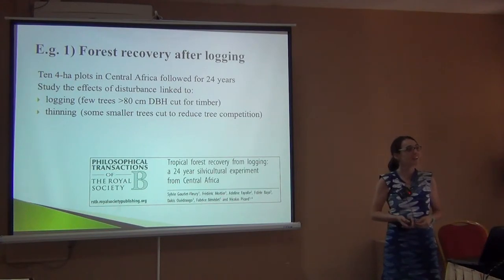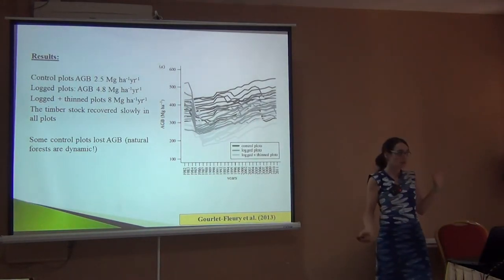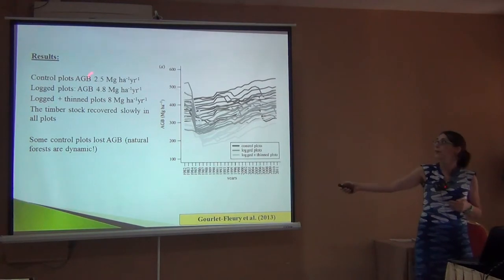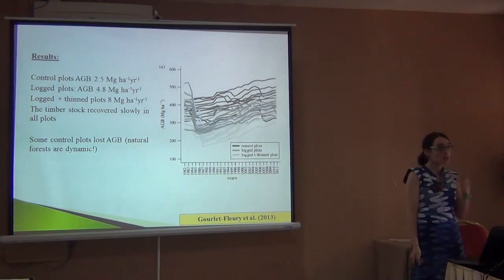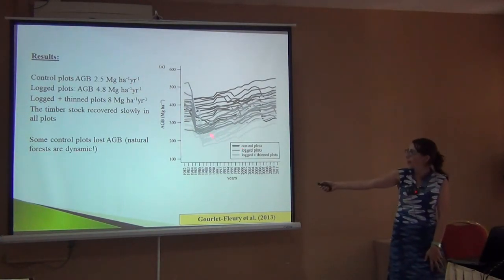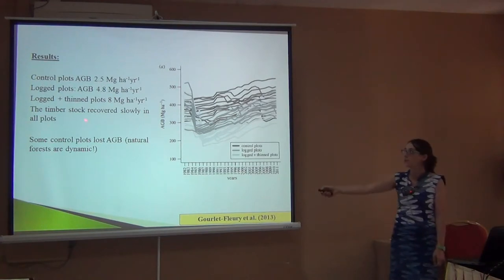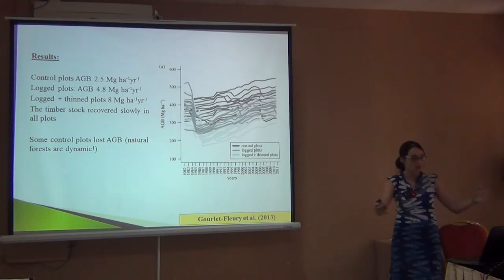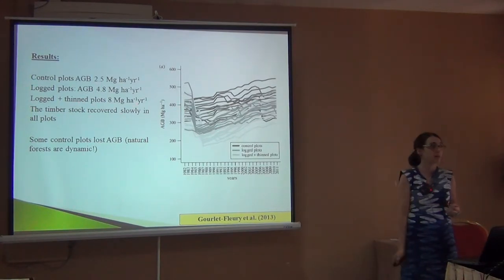The control plots that were not logged were accumulating 2.5 megagrams of biomass per year. The plots that had been logged lost biomass initially, but then recovered quickly at 4.8 megagrams per year — growing faster than the control plots. And those that were logged and thinned, giving more resources to the remaining trees, went even faster. So for carbon purposes, after logging it would be beneficial to thin plots because you accumulate biomass faster.